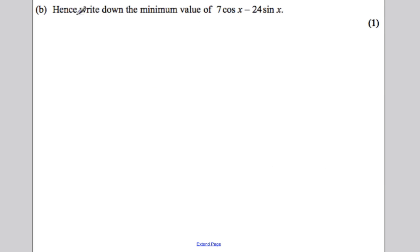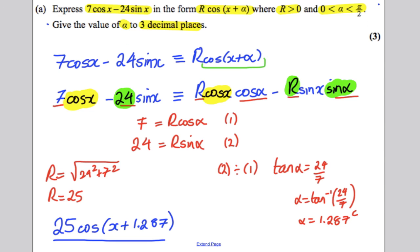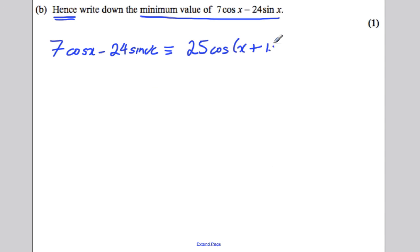Now, part B says hence, and very important hence, write down the minimum value of this expression. Now, we've just shown that 7 cos x subtract 24 sine x is the same thing as 25 cos of x plus 1.287 radians. Now, what's the minimum value of this? Well, the minimum value of this must be the minimum value of this.